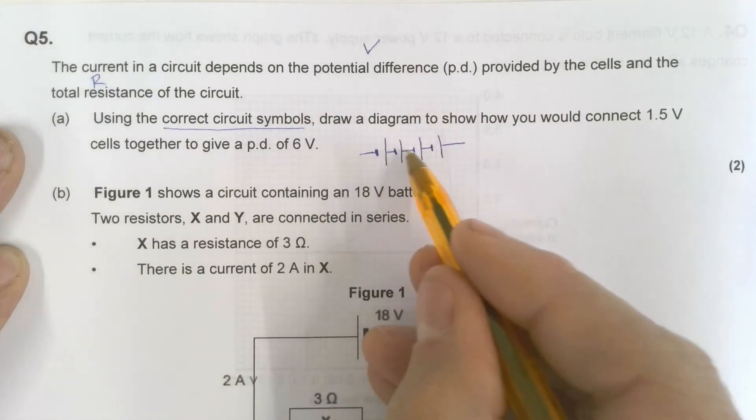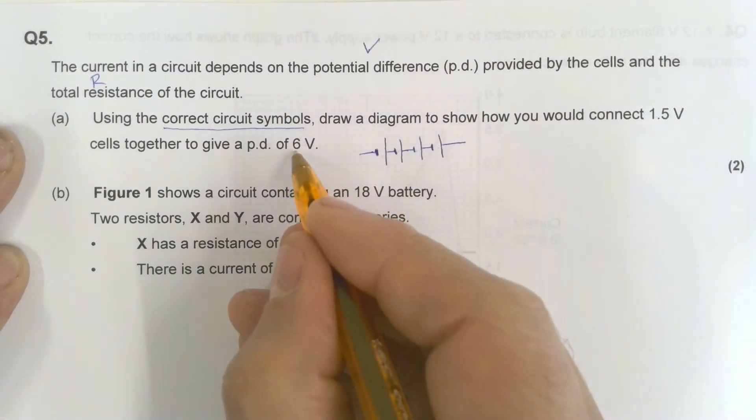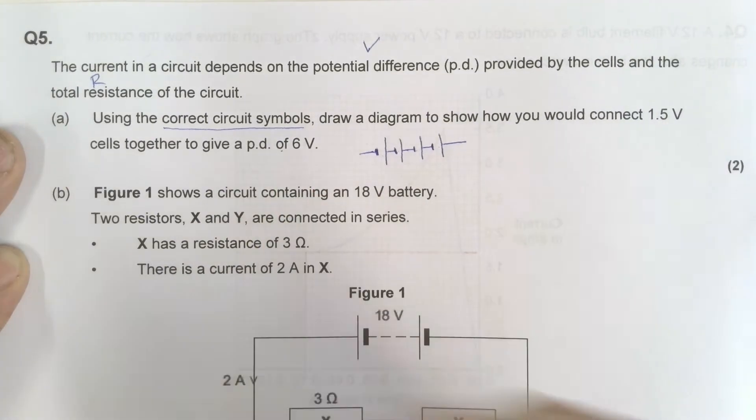And there we go. So 1, 2, 3, 4 bulbs in total, gives me 4 times 1.5, gives me a total of 6 volts.